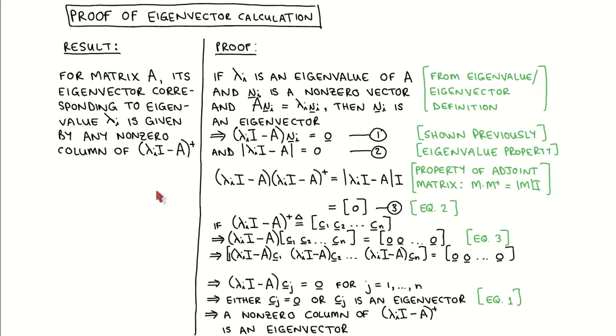Let's now prove our method for calculating the eigenvectors of A. The result we want to prove is on the left-hand side. It says that for matrix A, the eigenvector corresponding to eigenvalue lambda I is given by any non-zero column of the adjoint of matrix lambda I times I minus A.